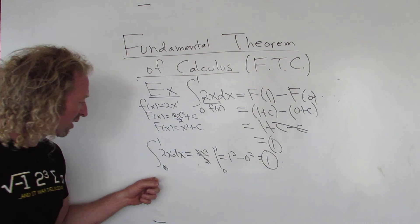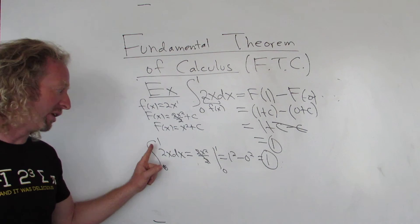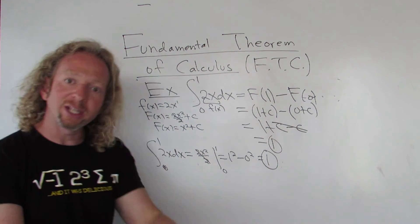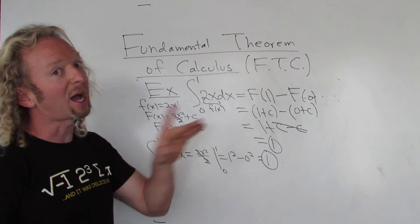And so the moral is, when you're integrating now, and it's a definite integral, it means you have limits of integration. That's called the lower limit, that's called the upper limit. Don't write the plus c. If it's a definite integral, don't worry about the plus c. What does this number mean?